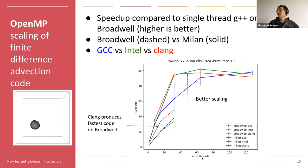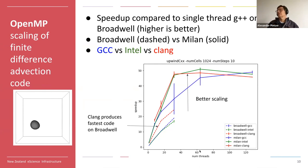This is an OpenMP application — a finite difference advection code that mimics a lot of physics codes that do spatial discretization like finite elements, finite difference, and finite volume. On Mahuika standard you can go to maybe 36 threads; here we went to 32, and it stops there because you don't have any more cores.